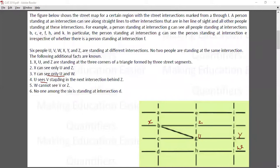U sees V standing in the next intersection behind Z. U sees V standing in the intersection behind Z, so V will come here. W cannot see V or Z - this condition is automatically getting satisfied. No one among the six is standing at D. So this means that this is our final arrangement.